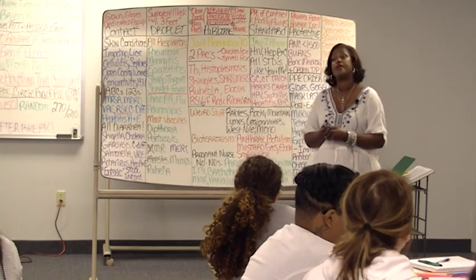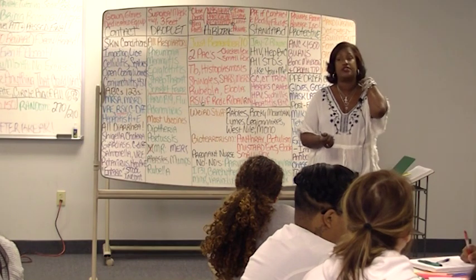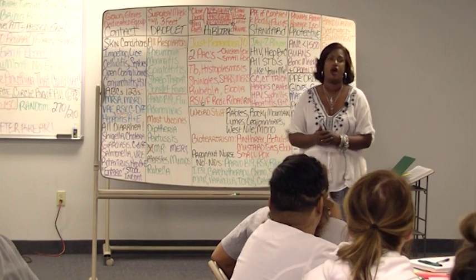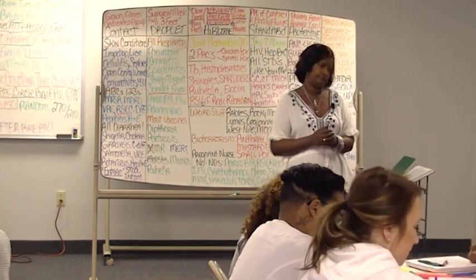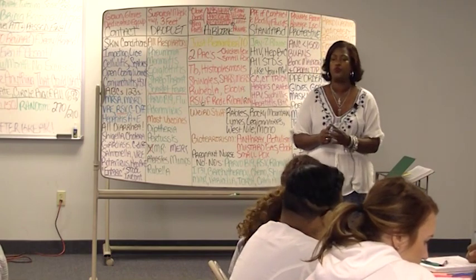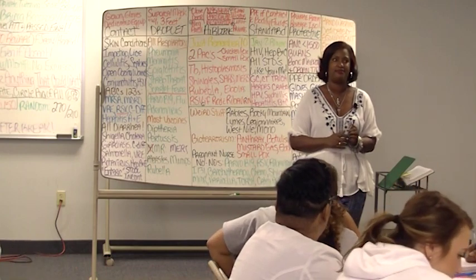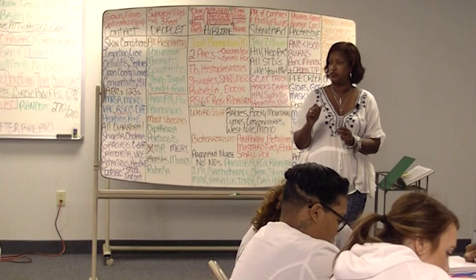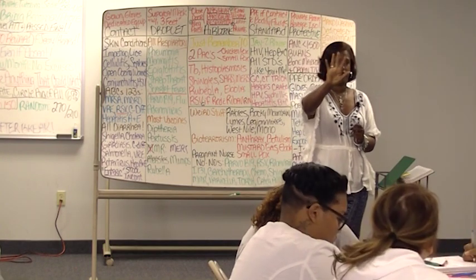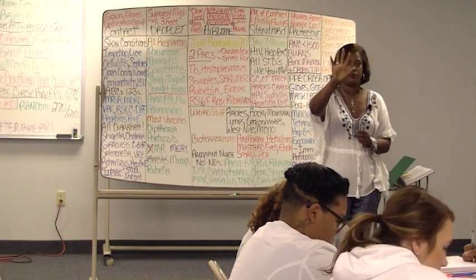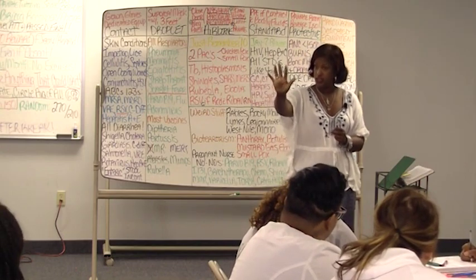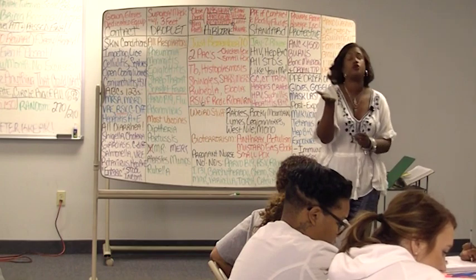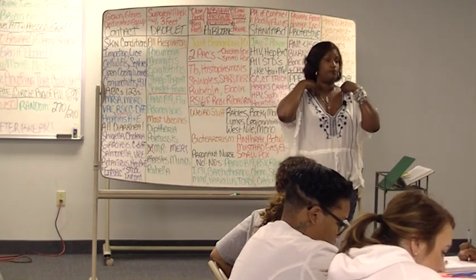Next is Parvo B-19. One challenge as a nurse is knowing multiple names for everything. This condition is also called Fifth disease and slap cheek. Here's how to remember it: it takes all five fingers to slap the cheek. So: Fifth disease, slap cheek, Parvo B-19 — all three are names for the same condition.